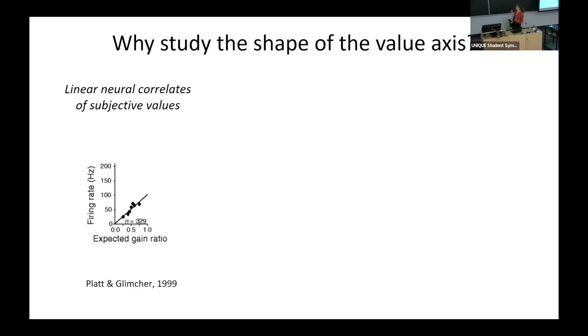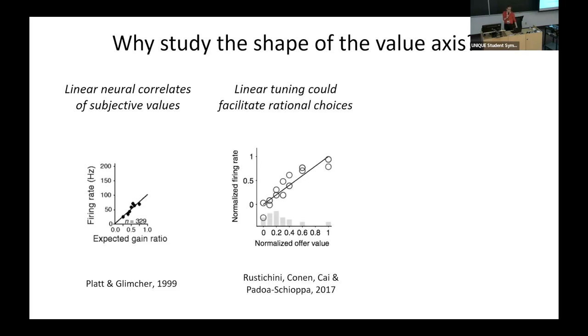So early studies show that, indeed, there's some indication that this might be a kind of a linear axis. Here you can see that the firing rate scales with the expected gain, so the value of the option in these experiments. And also, linear tuning is considered beneficial for rational decision-making, so the decision-making which maximizes the reward. Because linear representation maintains all the proportion between the options and increase in value causes the proportional increase in the firing rate, so it's a good basis for all kinds of computations and all kinds of comparisons.